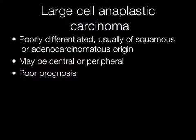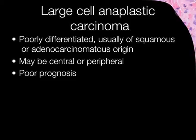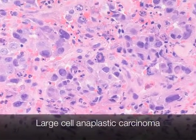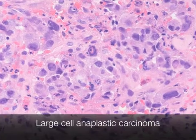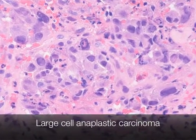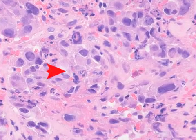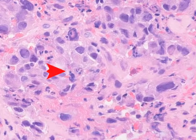Large cell anaplastic carcinomas are poorly differentiated tumours, usually of squamous or adenocarcinomatous origin. They may be centrally or peripherally situated and have a poor prognosis. This is an example of a large cell undifferentiated carcinoma. The tumour is completely undifferentiated.